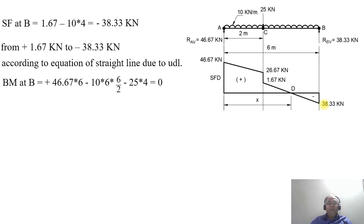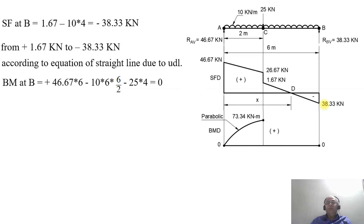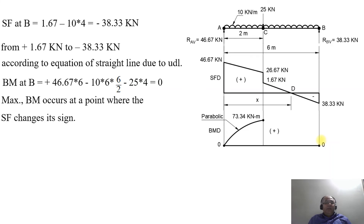The bending moment at B = (46.67 × 6) − (10 × 6 × 6/2) − (25 × 4) = 0. However, we cannot directly join the curve from C to B because at point D the shear force changes sign. The maximum bending moment occurs at the point where SF changes its sign. We call this point D and consider its distance as X meters from A.